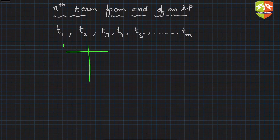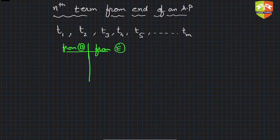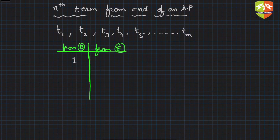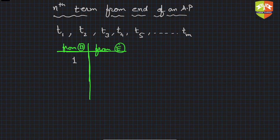For that, we'll draw a small table. Here we'll write 'from beginning' (B) and 'from end' (E), and try to understand the positions. Let's say there are m terms in an AP. So something which is first from the beginning is the mth from the other side.